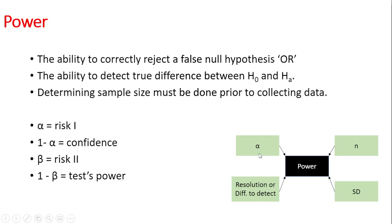As alpha increases, your power increases. As n, the number of samples, increases, the power increases. As standard deviation increases, the power goes down. And when the difference to detect goes down, your power also goes down.